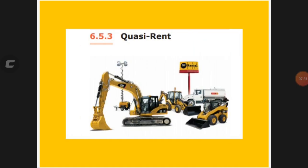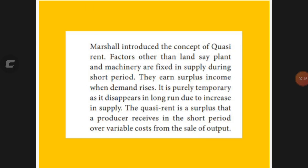Next we will look at quasi-rent. Quasi-rent means that apart from using land, man-made materials such as plant and machinery used by a firm also require payment. According to Marshall, we can earn surplus income when demand is increasing, but this can only happen in the short period, not in the long period.